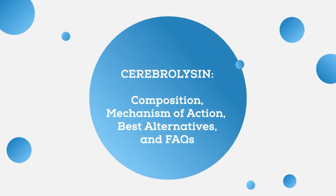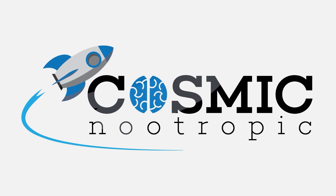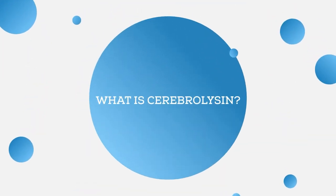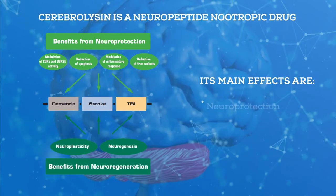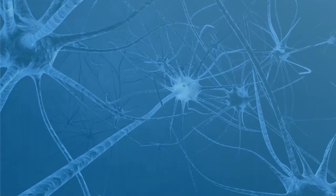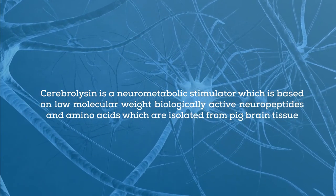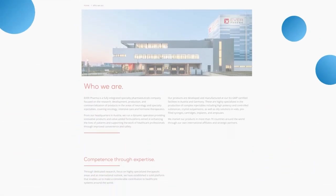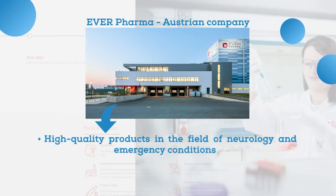In this video, we're going to talk about a very popular peptide compound: Cerebrolysin. Cerebrolysin is a neuropeptide nootropic drug. Its main effects are neuroprotection and neuro-restoration. In other words, Cerebrolysin is a neuro-metabolic stimulator based on low molecular weight biologically active neuropeptides and amino acids, which are isolated from pig brain tissue. The producer of Cerebrolysin is an Austrian company, Ever Pharma.